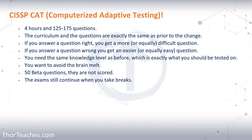On the exam, you're going to get 50 beta questions. They don't count towards your score — they are only used by ISC Squared to see how well they perform, and they may include them in future tests. If you get them right or wrong, it doesn't matter. So let's say you pass on question 125, and out of those 125, 50 are beta questions, so really you only needed to answer 75 questions — or enough weighted questions right out of those 75 — to pass the exam.